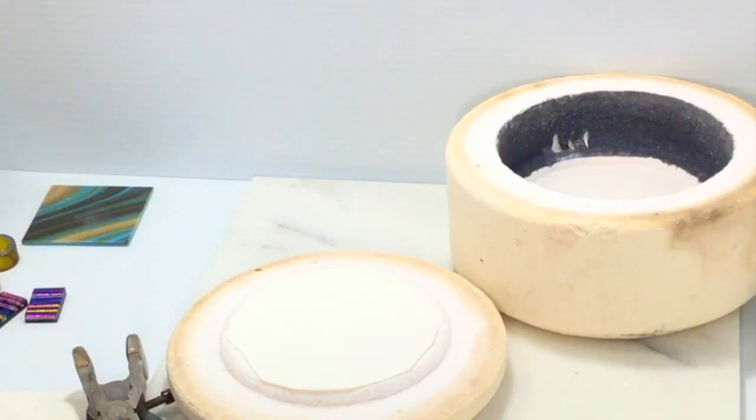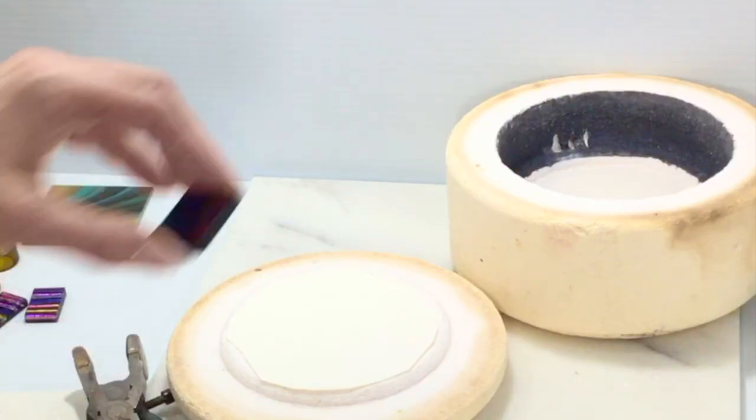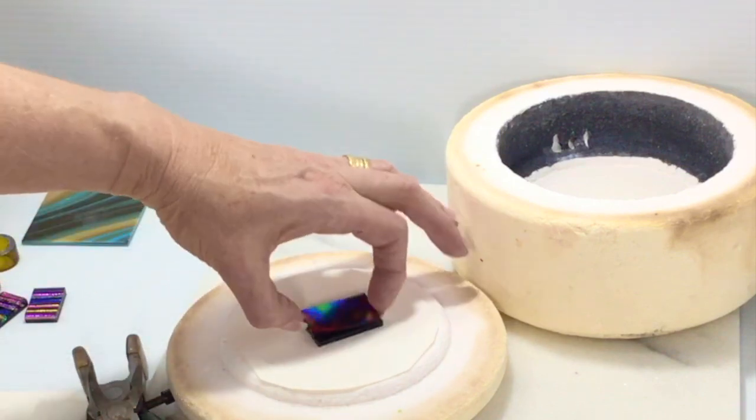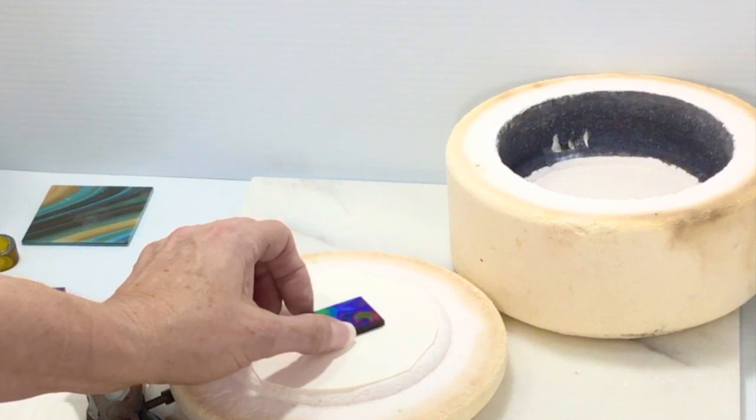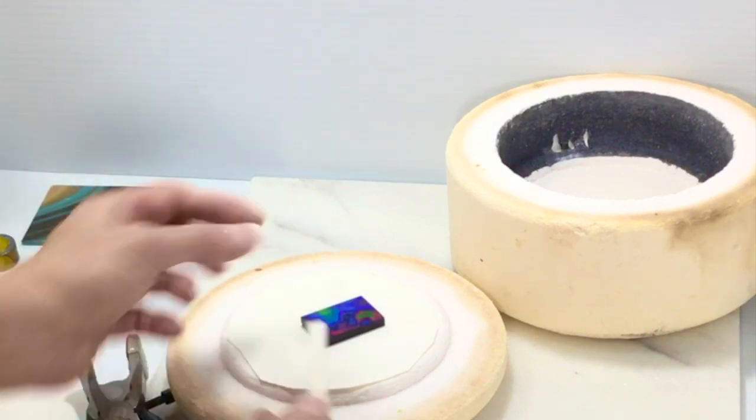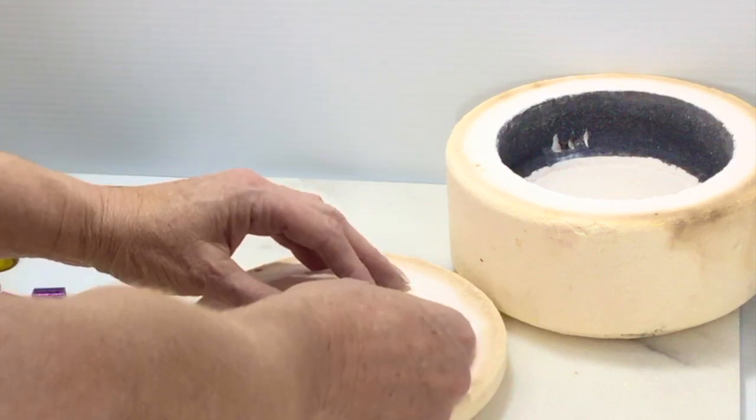Another option is fusing. Doing a full fuse of glass. You can set two pieces of glass in there. Full fuse. And end up with a finished pendant. You can also put in a piece of fiber paper to create a channel for your chain later.